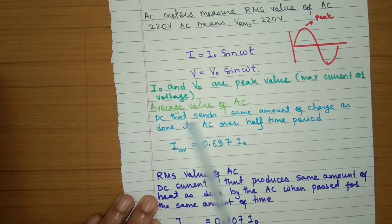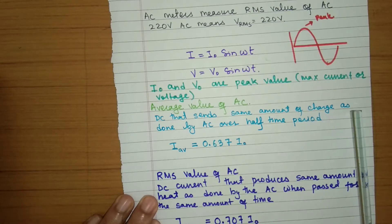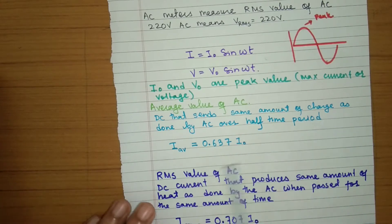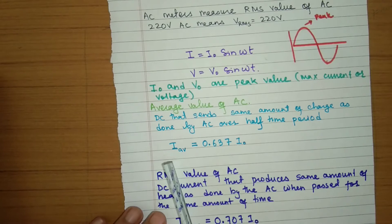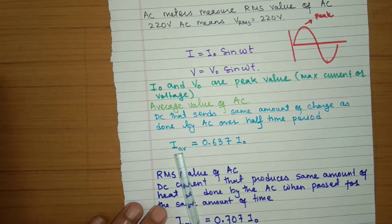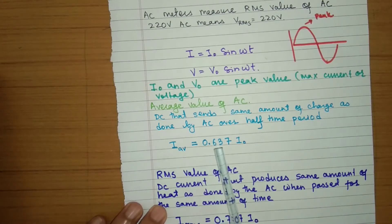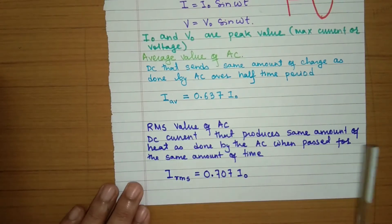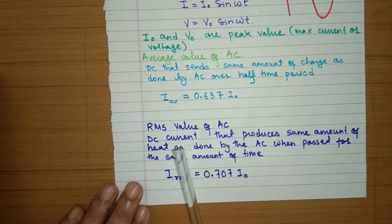The average value of AC is that DC which sends the same amount of charge as the AC does in its half time period. Its formula is given by I_average = 0.637 × I₀.